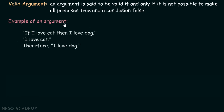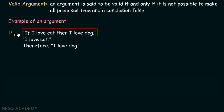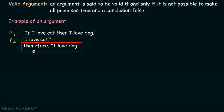Let's consider one example of an argument. If I love cat, then I love dog. I love cat, therefore I love dog. Here 'if I love cat then I love dog' is the first premise, let's say P1. 'I love cat' is the second premise, let's say P2. And 'I love dog' is our conclusion, indicated by 'therefore'.